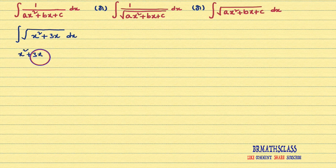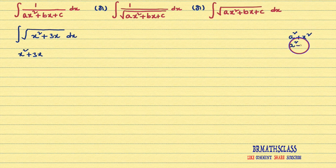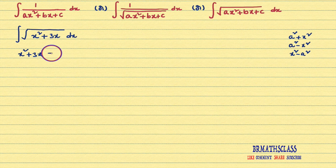Now my main intention is I want to write this expression x² + 3x into any one of these forms: a² + x², or a² − x², or x² − a². I want to write this expression into any one of these three forms. We have a particular procedure, and this procedure is fixed for all the problems.